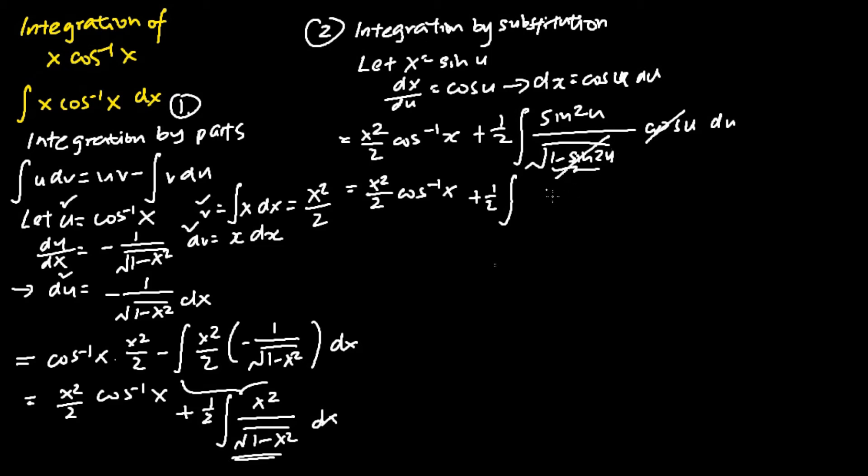So ultimately, we just have the following, which is sine square u du. And what is sine square u? By applying the trigonometry identity, the double angle formula, sine square u equals 1 minus cosine 2u over 2 du.